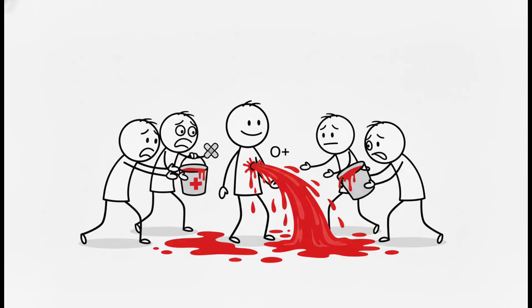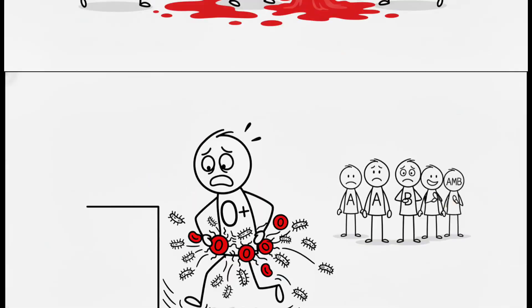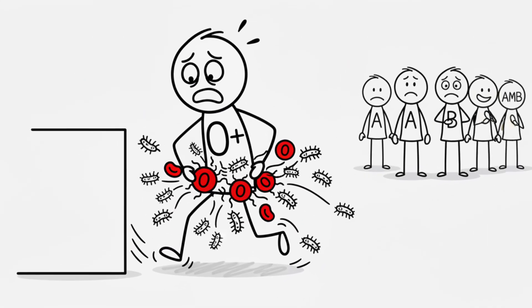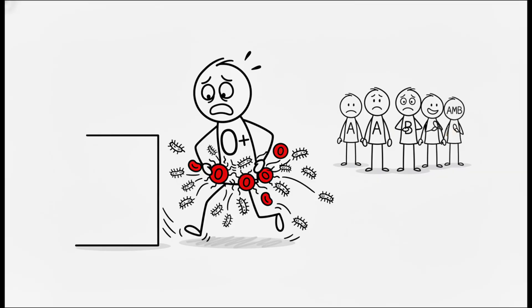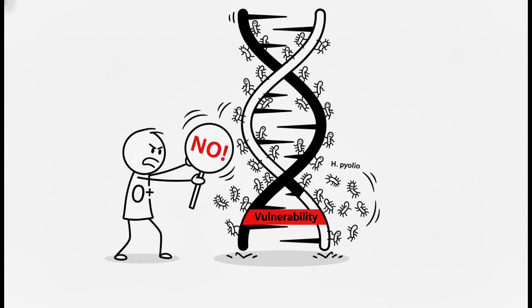The bad? That same free-flowing blood makes severe bleeding harder to stop in accidents. And O types are sitting ducks for Helicobacter pylori. The bacteria behind most stomach ulcers latches onto O blood cells easier than any other type. It's a vulnerability coated into your DNA.